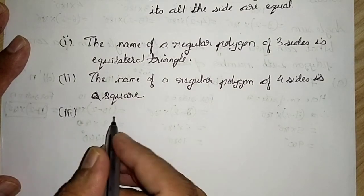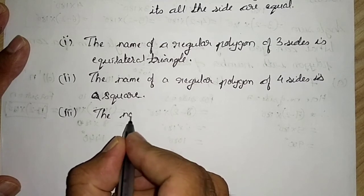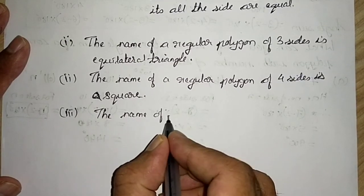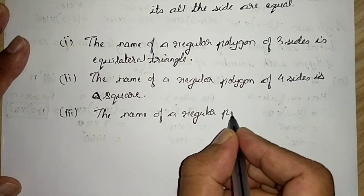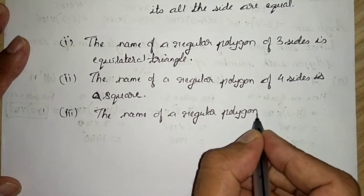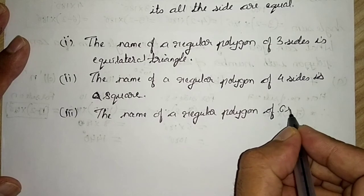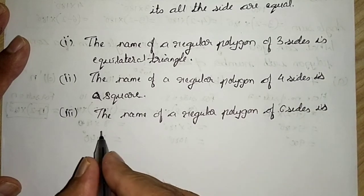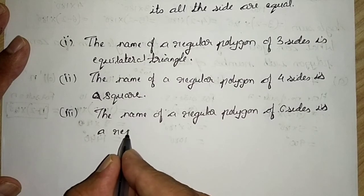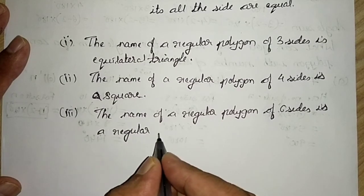Third, the name of a regular polygon of six sides is a regular hexagon.